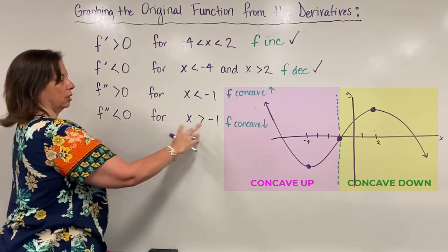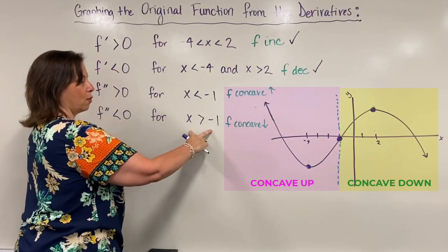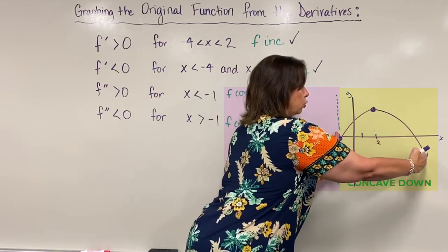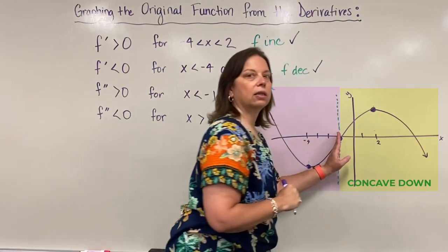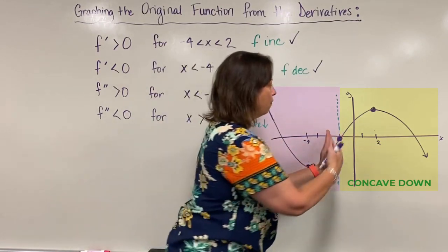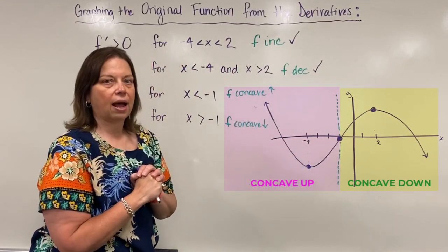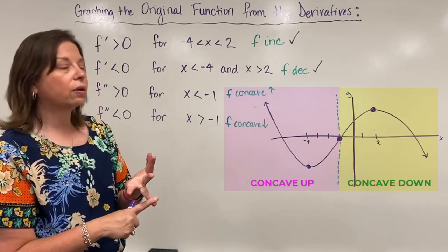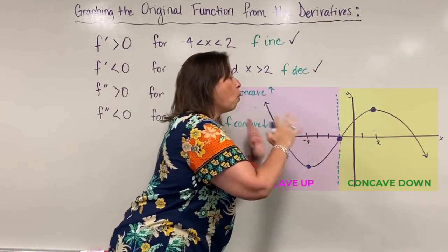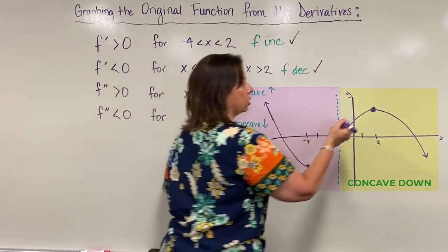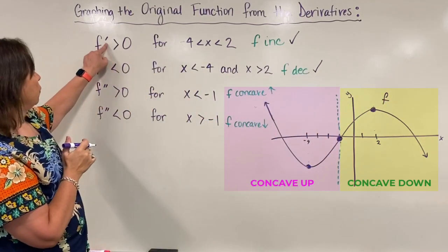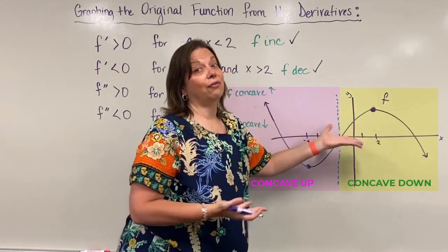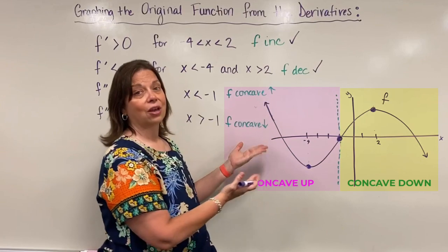For x greater than negative 1, the graph should be fully concave down. After the negative 1 mark, the graph is truly concave down with no weirdness at the end to revise. So here's an example of folding in first and second derivative information to sketch one continuous function for the original function f. We were given derivative information about this mysterious function f, and now we know what f looks like — we have a graph, which is meaningful even without a function equation.